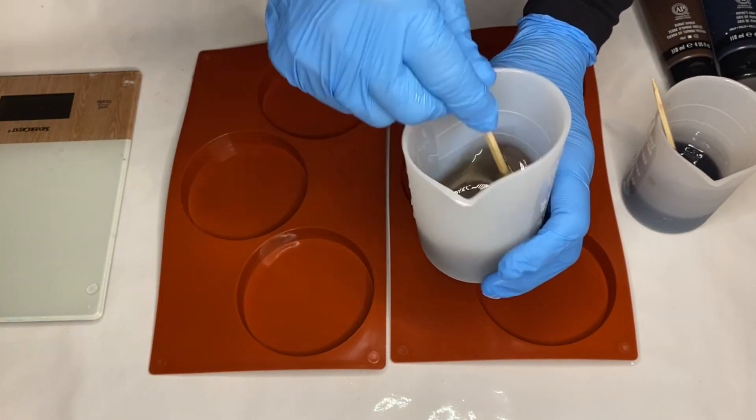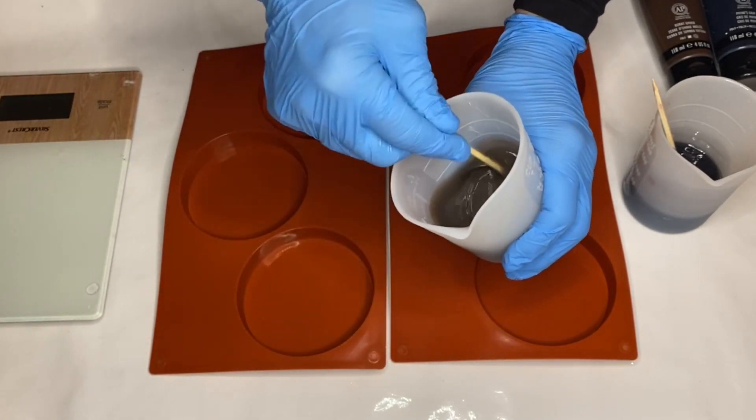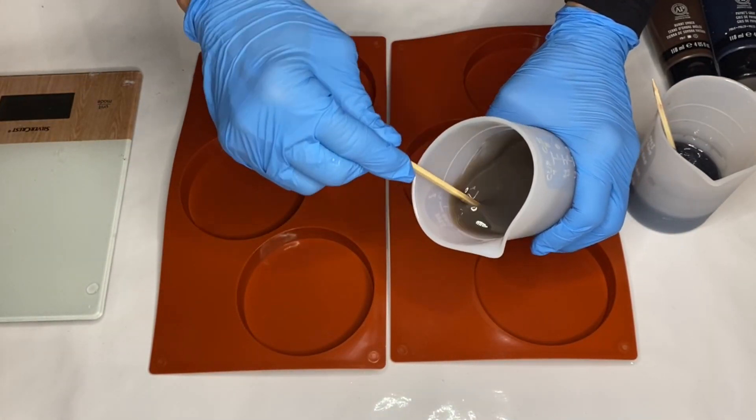You want to make sure that you're mixing the pigments into the resin really well, and you can check the opacity of it with the wooden stick like this.